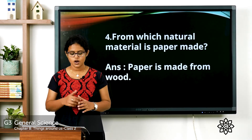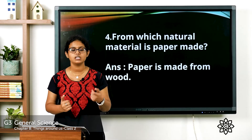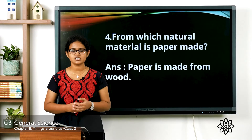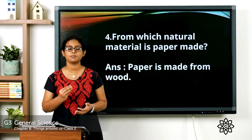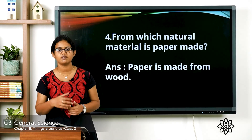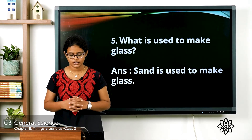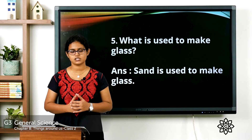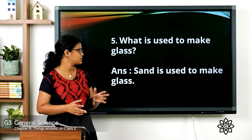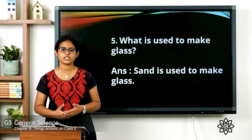Question four — from which natural material is paper made? Paper is a man-made thing. Paper is made from wood, and we get wood from plants. Question five — what is used to make glass? Glass is a man-made thing. Sand is used to make glass, and sand is a natural thing obtained from the earth.